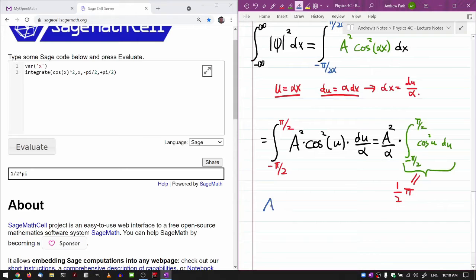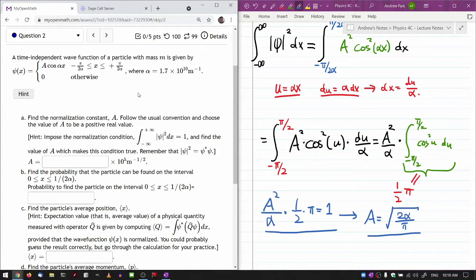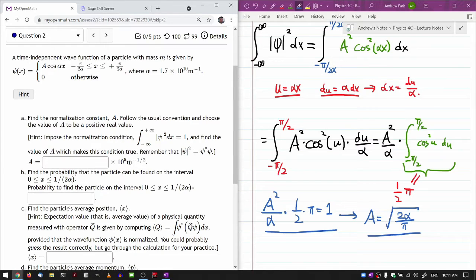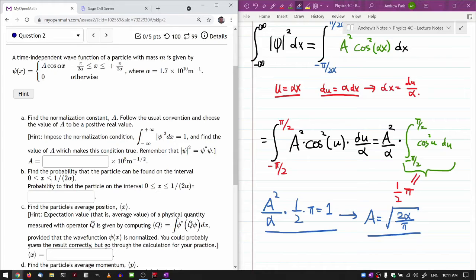That a squared over alpha times 1 half times pi is equal to 1. So solving this for a, you get a is equal to, let's see here, square root of 2 alpha over pi. And looking back at here. I don't know if this tells you anything. Alpha does have unit of inverse meter. And I will tell you that a having unit of, actually, I guess the question gives it away. A should have unit of minus 1, minus 1 half. So yeah, that I think all works out. So plug in the numbers yourself. I'm just going to leave that there.